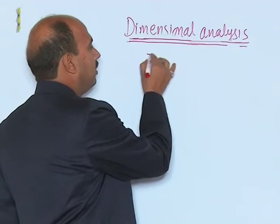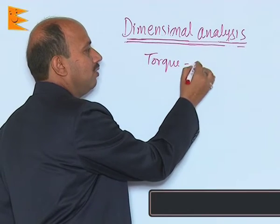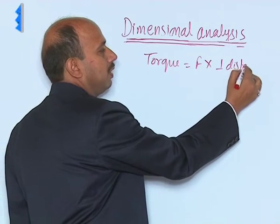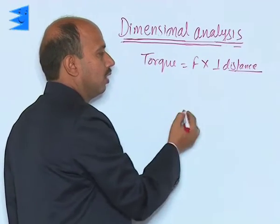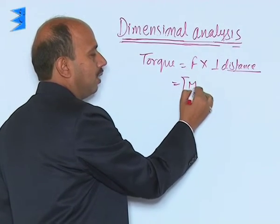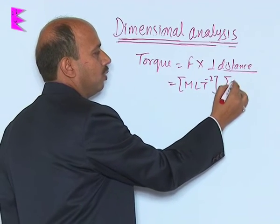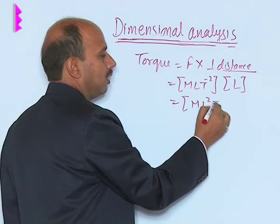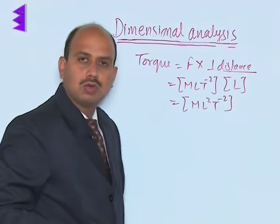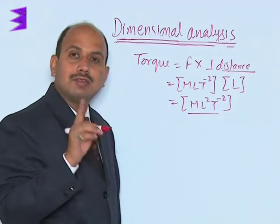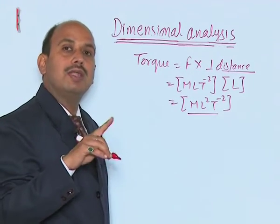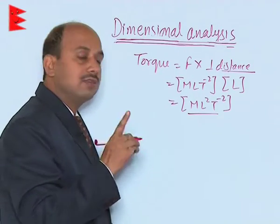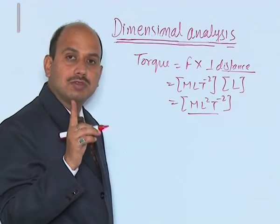The dimensional formula of torque: torque is force times perpendicular distance, so M L T⁻² × L = M L² T⁻². Notice that torque and work have the same dimensional formula, but they are different physical quantities. This means dimensional analysis cannot distinguish between different physical quantities.